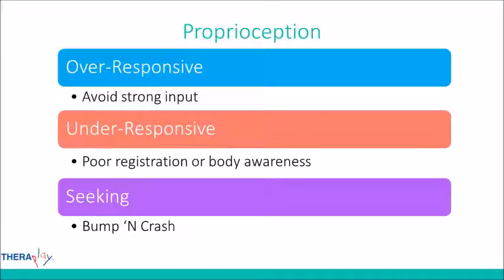With proprioception, kids who are over-responsive avoid strong input — weight-bearing activities like jumping, crawling, and running. Those early experiences in the first year of life, like tummy time and crawling, are really crucial for strengthening and building muscle and joint awareness. Kids who skip crawling or avoid tummy time — those can be sensory red flags. Over-responsive kids also tend to be less coordinated, so motor planning can be affected.